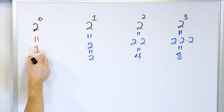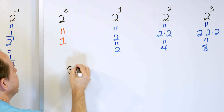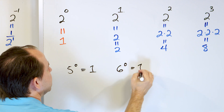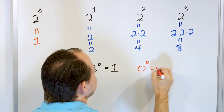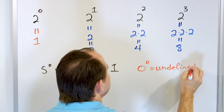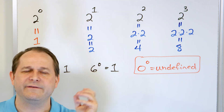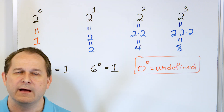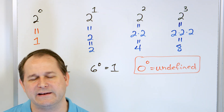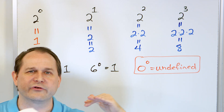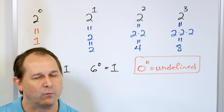Now, we said two to the zero is one. It turns out any number to the zero power is one. Five to the zero is one, six to the zero is one — any number to the zero is one. But there's one problem: zero to the power of zero. This one is undefined. When you get into more advanced math, you study how number systems are set up, and zero to the power of zero doesn't make sense when you get down into what zero means. So we can define any non-zero number to the zero power as always one, but zero to the zero power is undefined — that's something you just have to remember.